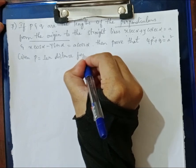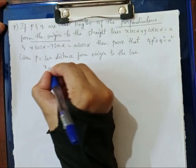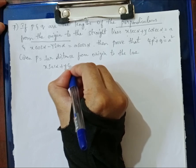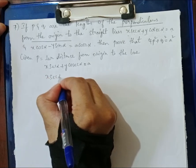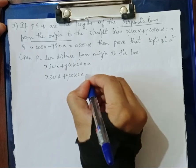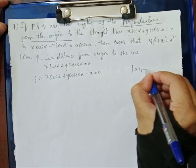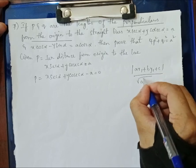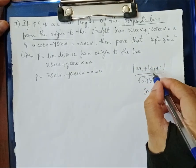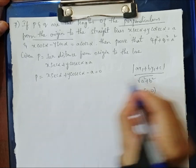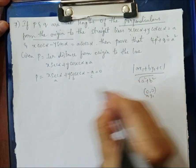Given: p is the perpendicular distance from the origin to the line x·sec(α) + y·cosec(α) = a. Rearranging: x·sec(α) + y·cosec(α) − a = 0. The perpendicular distance formula is |ax₁ + by₁ + c| / √(a² + b²). Since the origin is (0, 0), x₁ and y₁ are both 0.